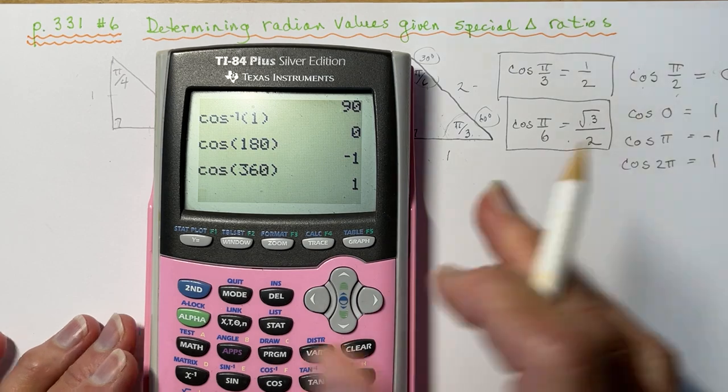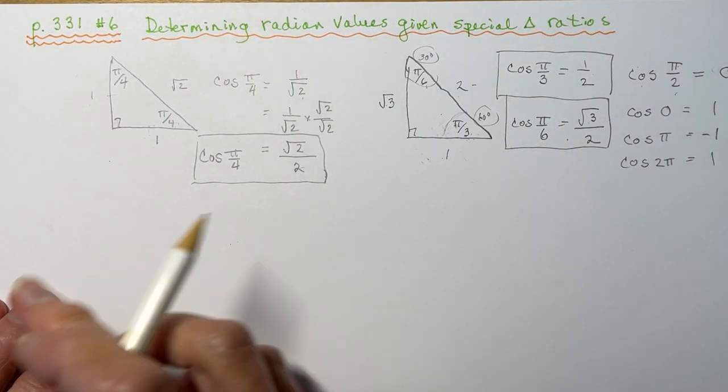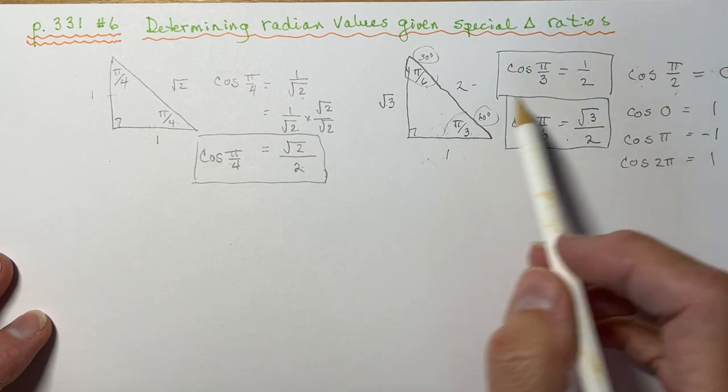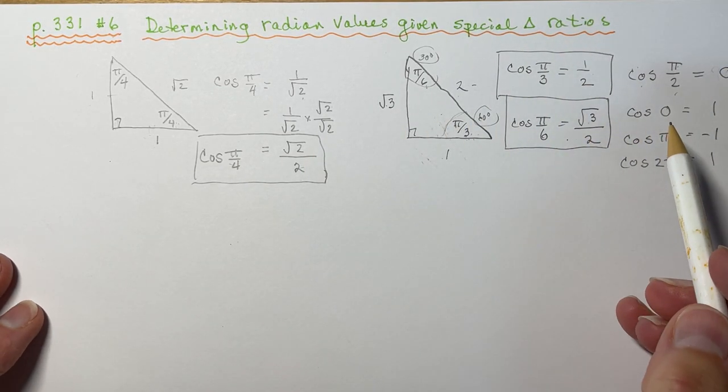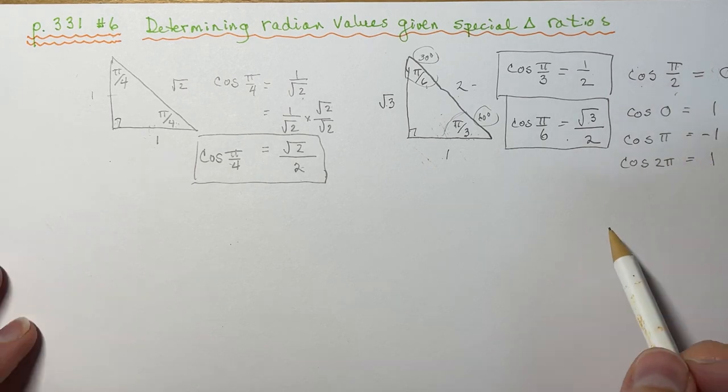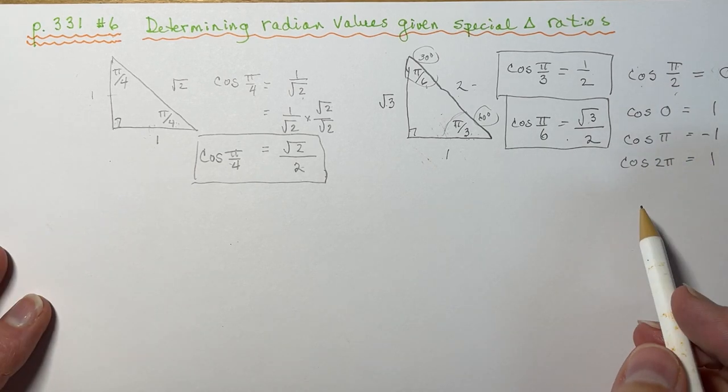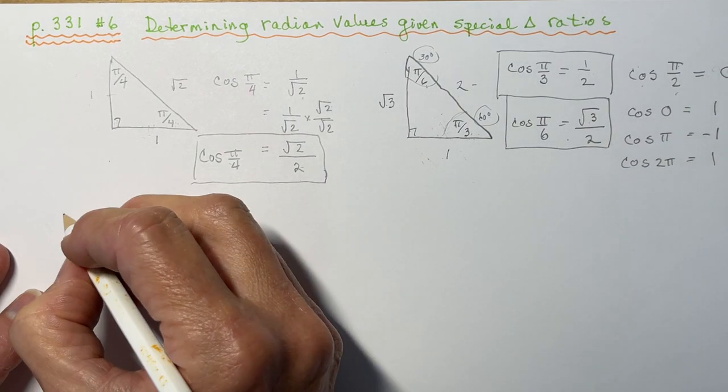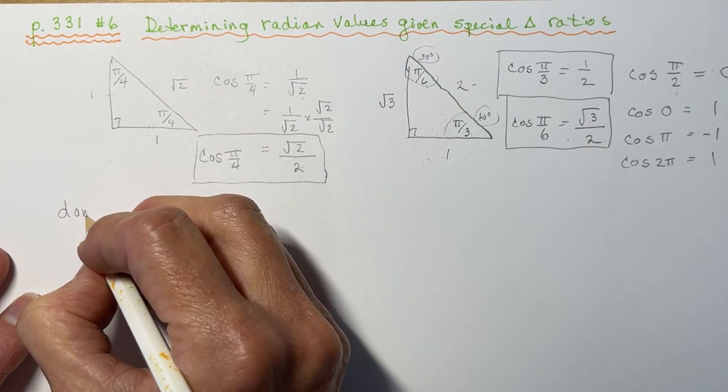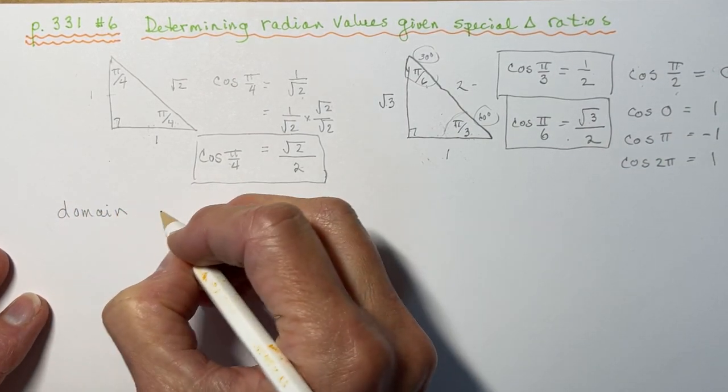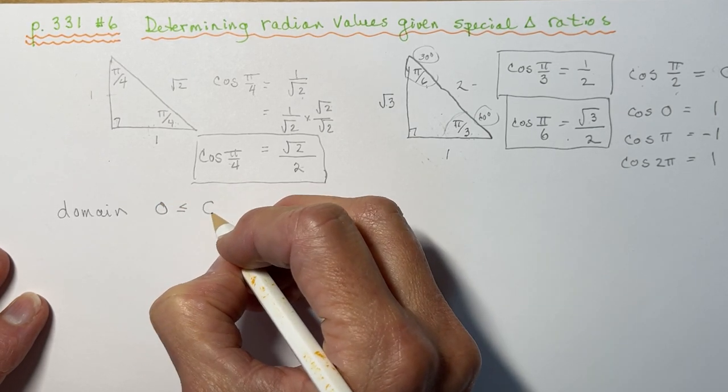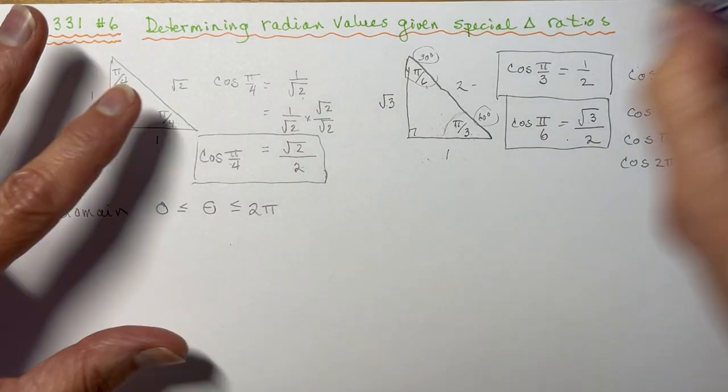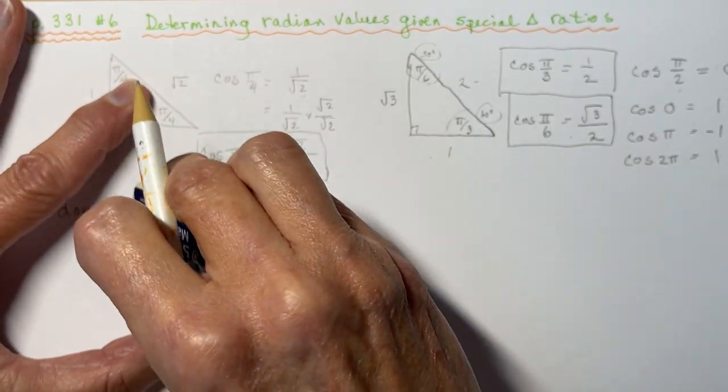So now I have everything I need. I know all of the ratios for the cos of pi over 4, pi over 3, pi over 6. And these are the ratios that show up in the question, because they're using those special triangles. Now, the next important thing to know is what is the domain that we asked for here. So in this question, they said the domain was pi to 2 pi.